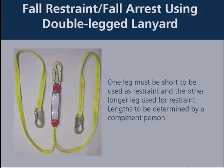Option three is a fall restraint or fall arrest system using a double-legged lanyard. One leg must be short — likely three feet — to keep you in restraint, and the other leg longer — approximately five feet — for use as an arrest system. The lengths will be determined by a competent person. When coming in from ground level, you'd use the short restraint lanyard; when elevated to a position where no risk of hitting a lower surface exists, you can use the longer leg lanyard to give more mobility in the platform.